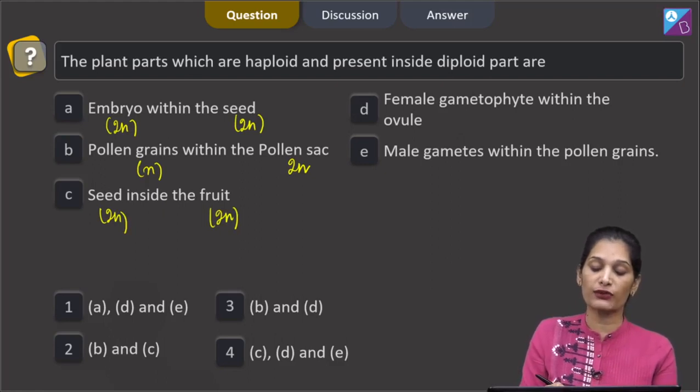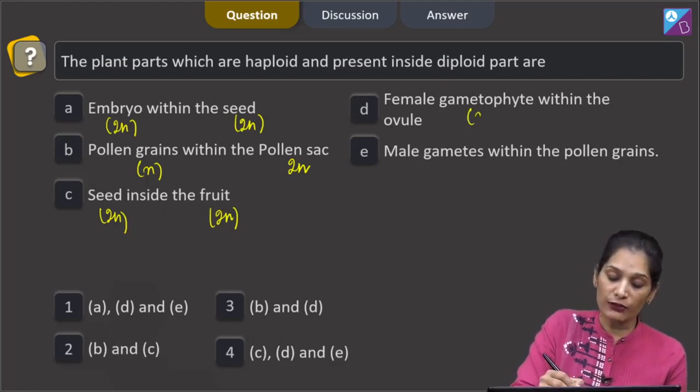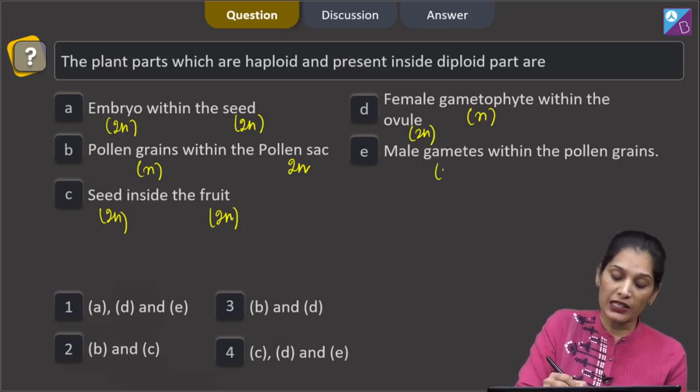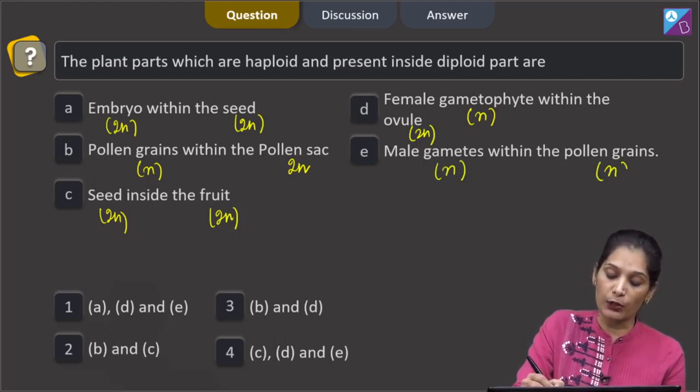D, female gametophyte within the ovule. Female gametophyte is haploid, ovule is diploid. E, male gametes within the pollen grains. Male gametes are haploid, pollen grains are haploid.